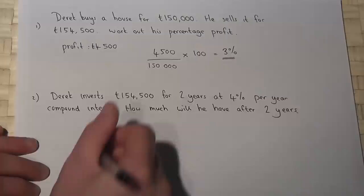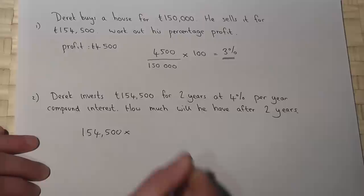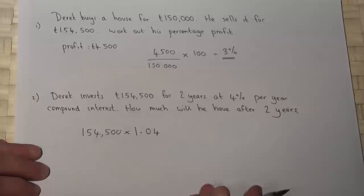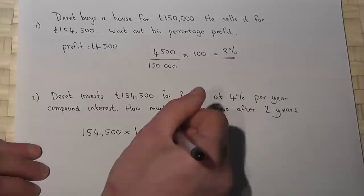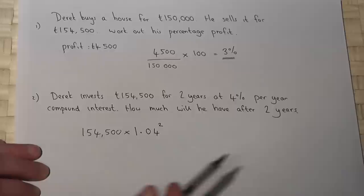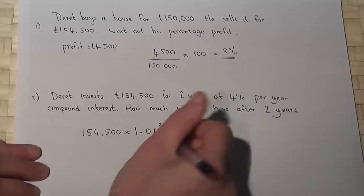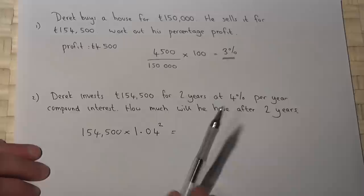Now, every year, the amount in his account will increase by 4%. Now if I do £154,500 and times this by 1.04, then 1.04 represents an increase of 4%. And because it's for two years, if we square this, then the power is the number of years which the money is invested for. So therefore, times by 1.04 squared, this will work out the amount after two years.